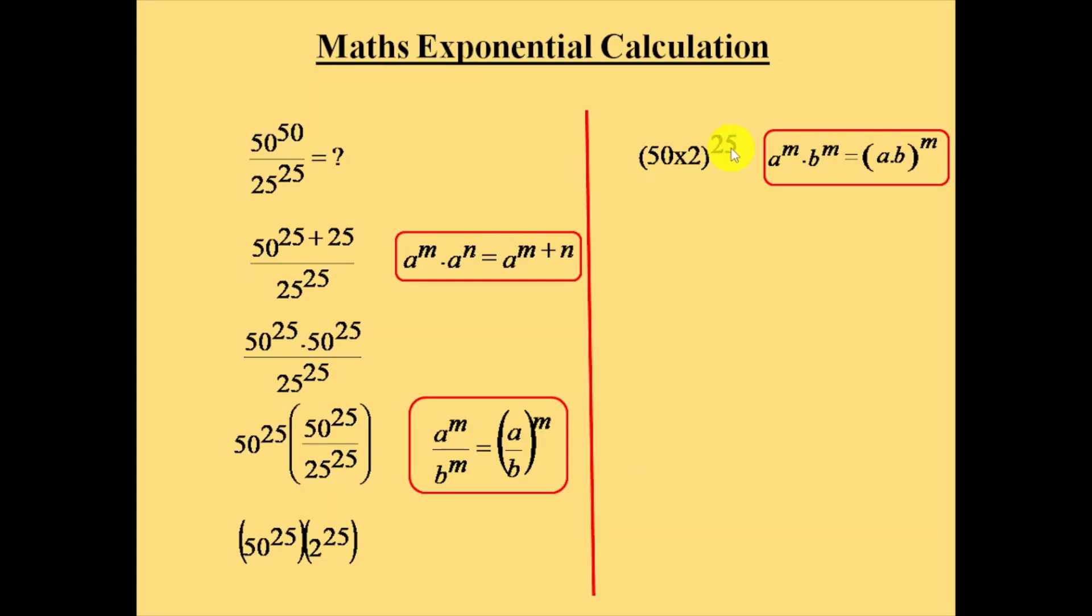50 times 2 is 100, so 100 power 25. We can write this 100 as 10 square, like this: 10 square whole power 25.